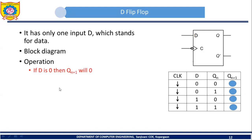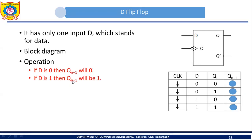Now let's see the operation of the D flip-flop. If D is 0, then Qn+1 — which means the next state of the flip-flop — will be 0. And if D is 1, then Qn+1, the next state, will be 1. This is the operation of the D flip-flop.